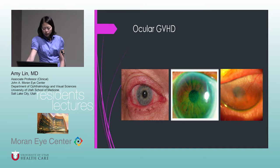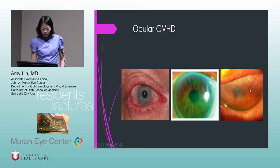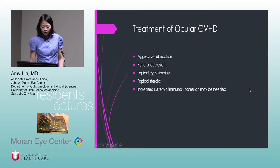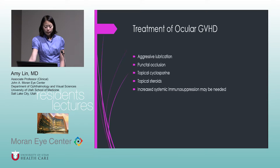GVHD leads to decreased goblet cell density, scarring of the lacrimal gland and conjunctiva, meibomian gland dysfunction and scarring, and limbal stem cell deficiency. When chronic, it can lead to extensive corneal neovascularization. Treatment is very aggressive dry eye management: aggressive lubrication, punctal occlusion, topical cyclosporine, topical steroids, and working with their hematologist or oncologist for increased systemic immunosuppression.